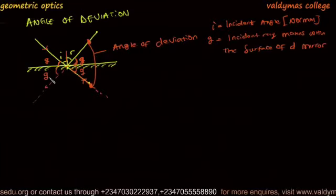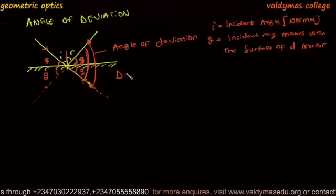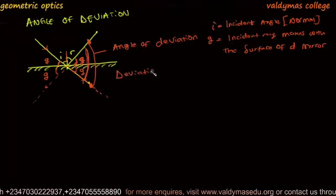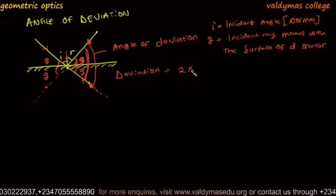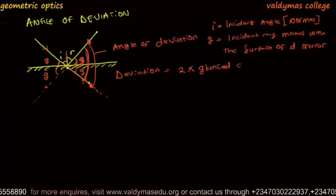And since this is the sum of the deviation, we say the angle of deviation is 2 multiplied by the glance angle, so we have δ = 2G, equation 1.